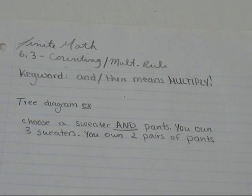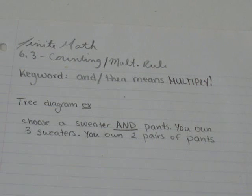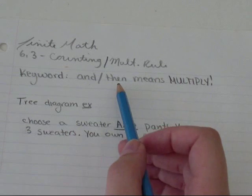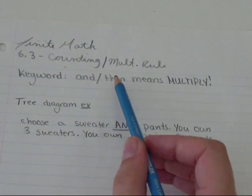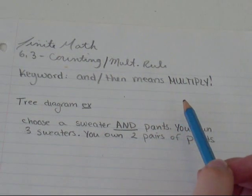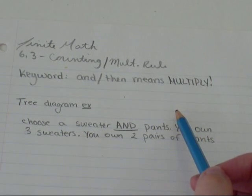Hi, everyone. In this video, I am going to talk a little bit about the multiplication rule from counting. Basically, the multiplication rule says that any time you see the word 'and' or 'then', as in choose something and something else, or choose something then something else, it means you multiply how many ways there are to choose the first one times how many ways there are to choose the second one.